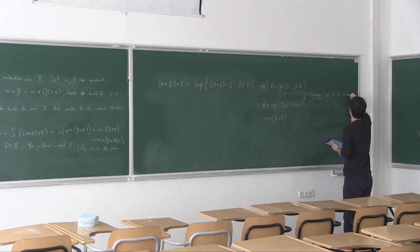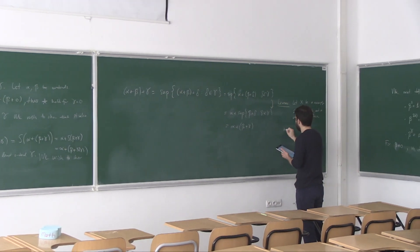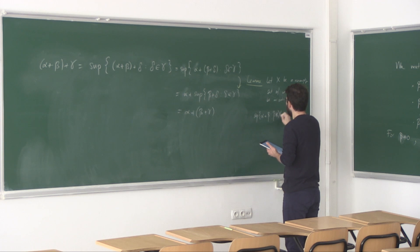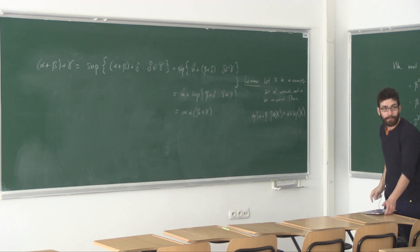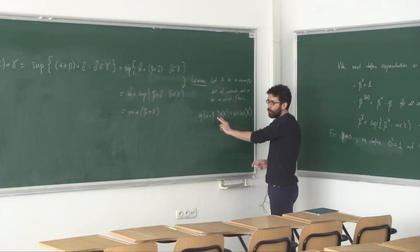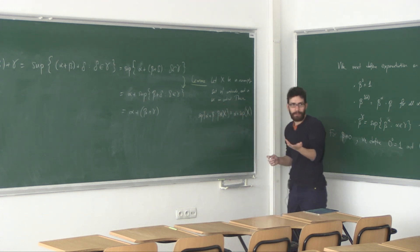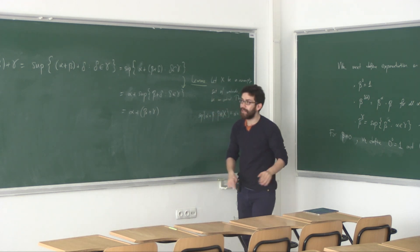The lemma states: let X be a non-empty set of ordinals and α be an ordinal. Then sup{α + β : β ∈ X} = α + sup(X). This allows me to move α outside the supremum — only from the left, since we're in a non-commutative setting. With this lemma, sup{α + (β + δ) : δ < γ} = α + sup{β + δ : δ < γ} = α + (β + γ) by definition of addition at limit stages.